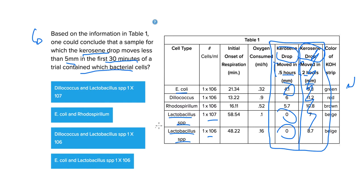A sample for which this happened contained which bacterial cells? Well, the only ones in the running now are gonna be E. coli and the Lactobacillus. Let's go ahead and look at our answer choices.